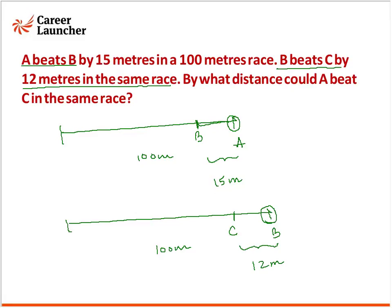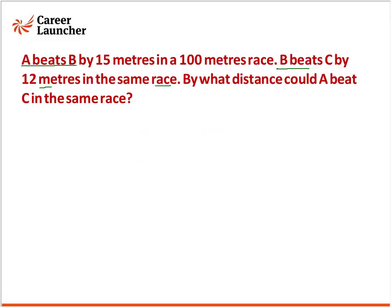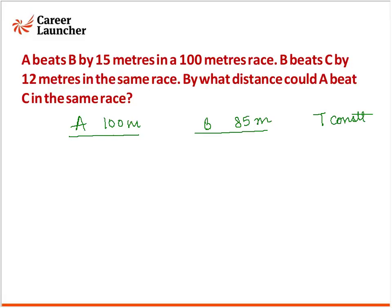Ab finally humse question pooch raha hai ki A ne C ko kitne distance se haraaya hoga. Isko karne ke kaafi tarike hain; jo mujhe do tarike sabse aasaan lagte hain, sabse pehle hum wo dekhte hain. Sabse pehli cheez humein de rakhi hai ki A ne B ko 15 meter se haraaya, matlab ki jab A 100 meter pe hoga, to B hoga hamaara 85 meter pe.